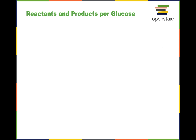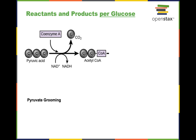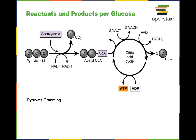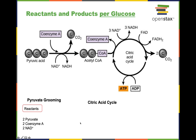Now let's look at the reactants and products of these reactions per glucose molecule. Starting with pyruvate grooming: the reactants going in are two pyruvate (or pyruvic acid), coenzyme A, and NAD+. What comes out is two acetyl-CoA, two CO2, and two NADH.